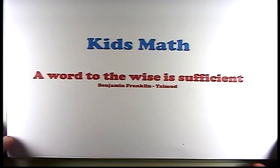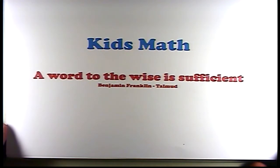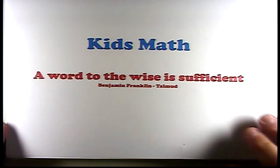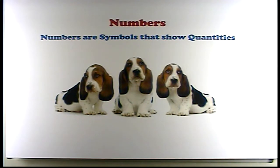Here we are at the beginning of our Kids Math class, and I'm reminding you of what Benjamin Franklin said in Poor Richard's Almanac. He said, a word to the wise is sufficient. And that actually is something that came from the Talmud many years before. And what it means is, if you're smart, you'll pay attention to what we're teaching you, and then you will learn what you need to know to be successful in life. And math is, of course, one of the most important things involved in that. And our first class is about numbers.